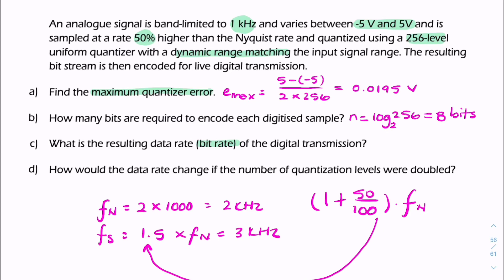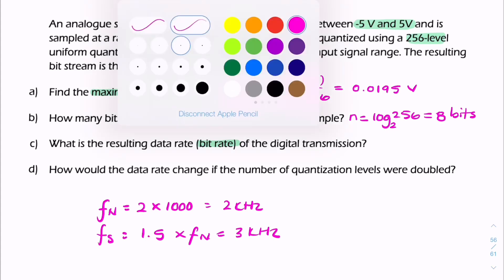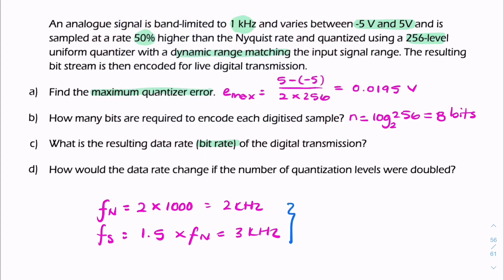So now we know Fs, the sample rate. All we need to do is multiply that by the number of bits. So the bit rate will be N times Fs. So that's 8 times 3,000. So that'll give me 24 kilobit per second.